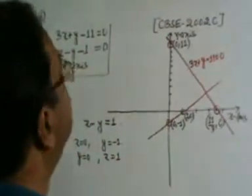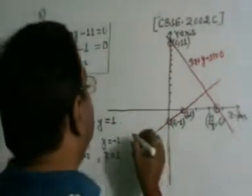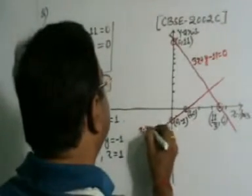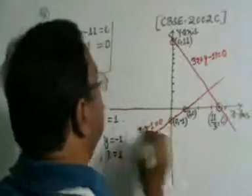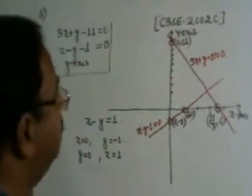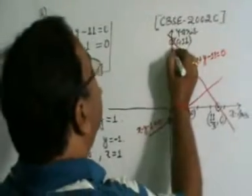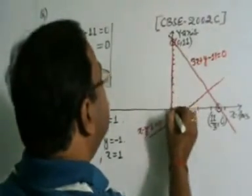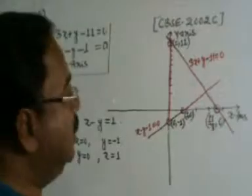Now, this is the line. Yeh line kya ho raha hai? x minus y minus 1 is equal to 0. Yeh line represent ho raha hai. Aur third kya diya hai? y-axis. Now, this is the y-axis. This is the y-axis.